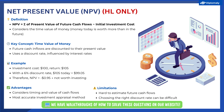To understand NPV, we introduce the concept of the time value of money. This basically means that $1 today is worth more than $1 you receive next year, which is worth more than $1 you receive five years in the future. The NPV takes into account the fact that cash flows received today are more valuable to the business than cash flows received in the future. It does this by discounting future cash flows into what they would be worth today — we call that the present value.